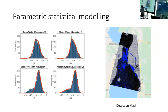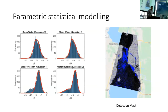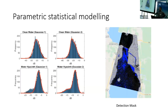This uses a mixture of Gaussian charts — for clean water you see a single-peak Gaussian distribution, whereas for the presence of water hyacinth you see double or multiple peaks in a Gaussian mixture. This allows us to create a detection mask that is usable by someone needing to take remediation action.